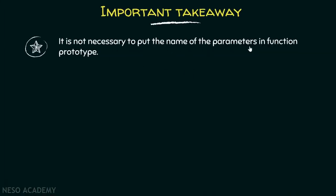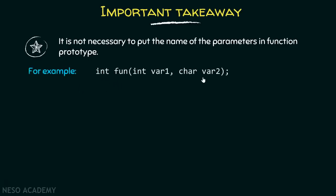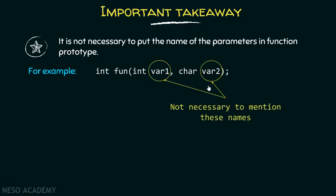It is not necessary to put the names of the parameters in the function prototype. Here you can see this is a function prototype, and in the parameter list, you have written the names of the parameters as well — which is not necessary at all. You can simply write the data type of these parameters, and that is enough in the function prototype. Although writing the names is also correct, it is not necessary. One important point: it is important to mention the parameter names in the function definition, but not in the function declaration.